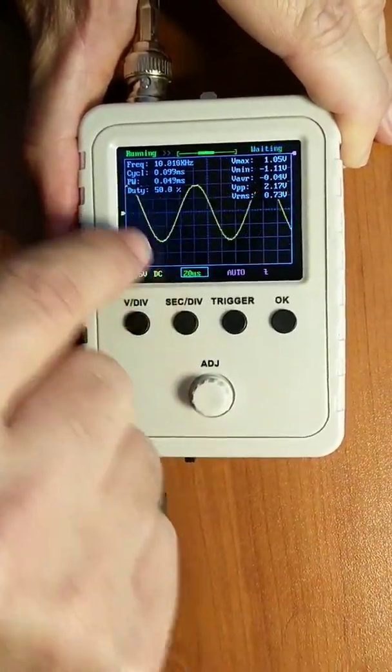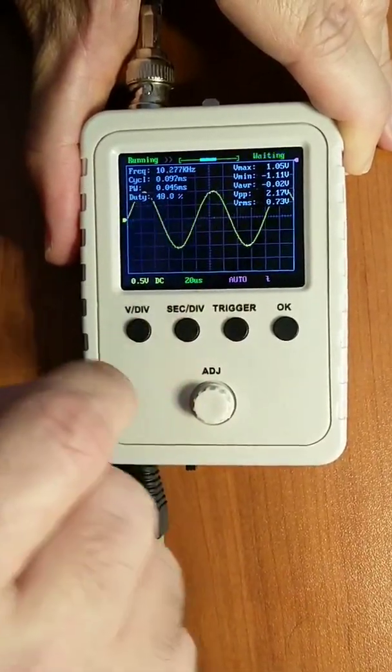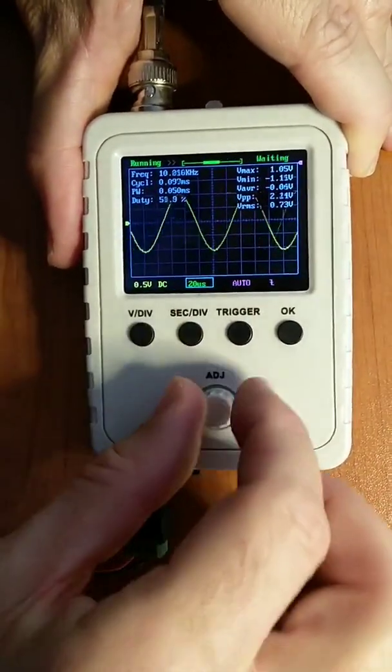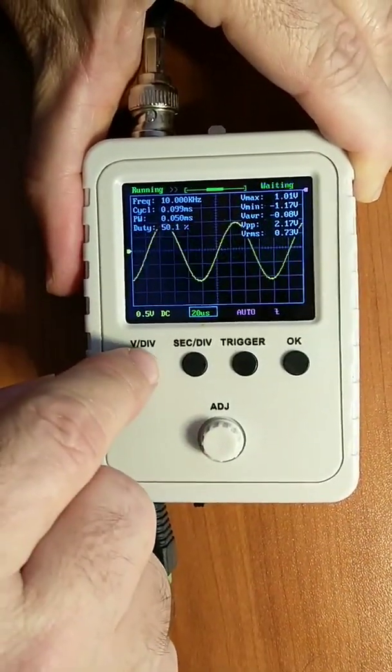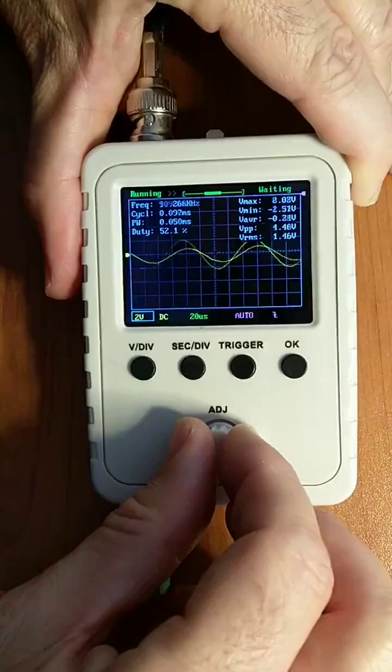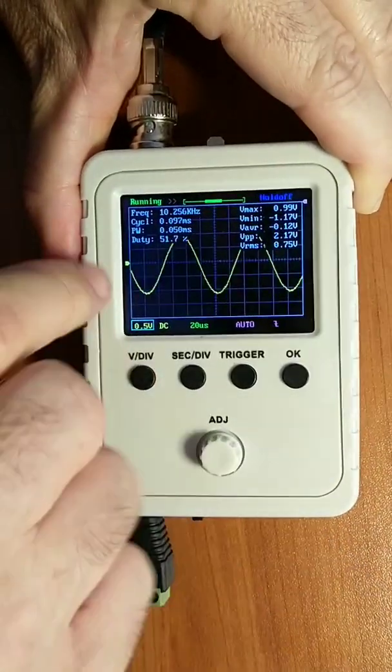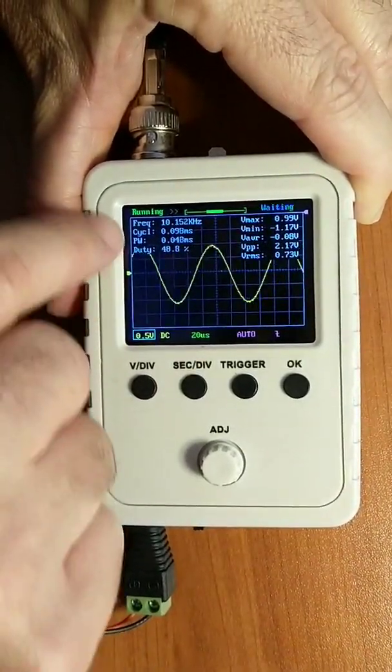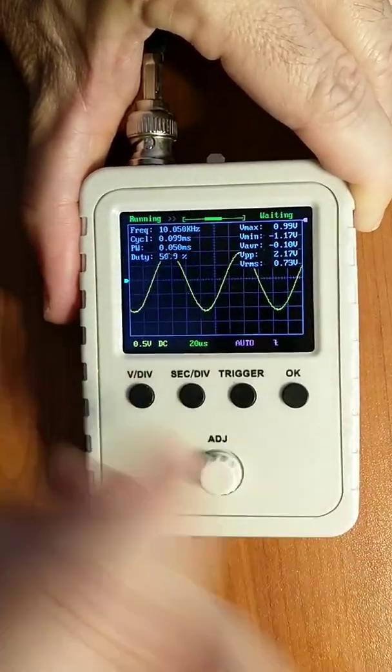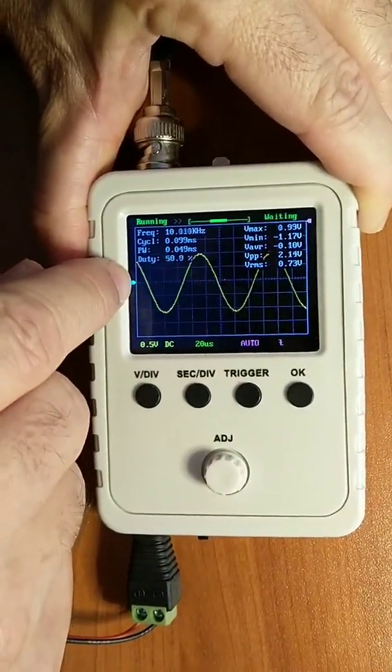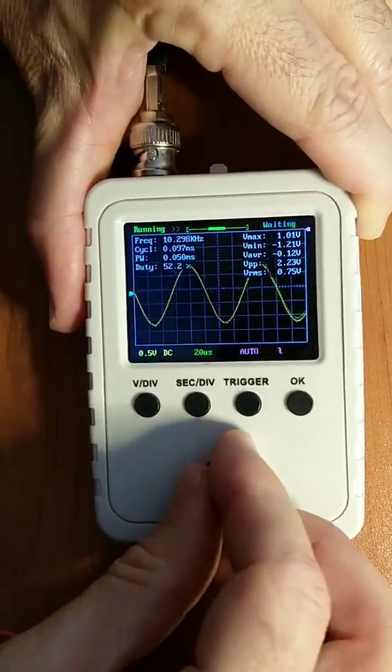A couple of other things: if you want to set the time per division, you can just press this time per division button and set it. If you want to set the voltage scale, you press the voltage button. Also, if you want to adjust the vertical position, press the volts per division button one more time. That little arrow there becomes blue and you can set the level up and down.